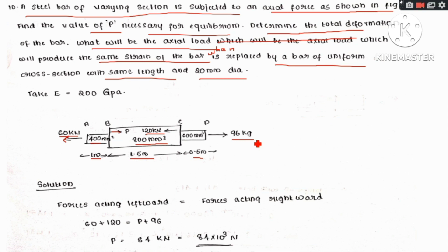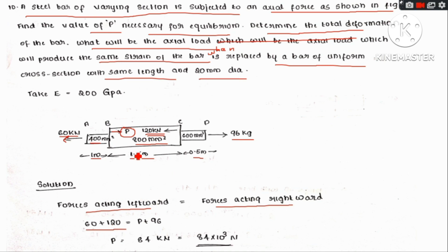To find P for equilibrium, we apply the equilibrium condition. Summing forces: left side forces 60 plus 120, right side forces P plus 96. Solving the equation gives P equal to 84 kN (84 × 10³ N).